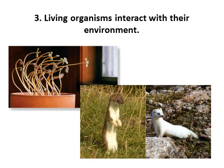Our third characteristic of life is that living organisms interact with their environment. For example, a plant grows towards sunlight, changing its growth patterns according to its environment. Here we also have a mammal that during the summer has brown fur to blend in with its environment, and during the winter the fur is white so it can blend in with snow. So living things interact with non-living things and also with each other.